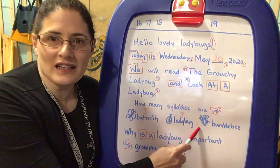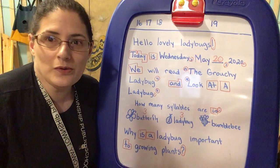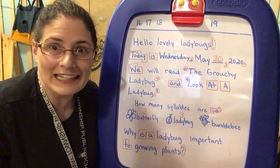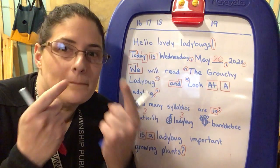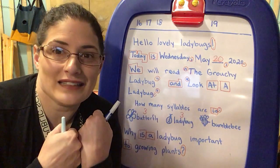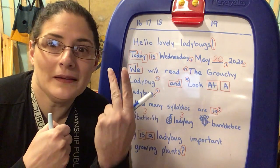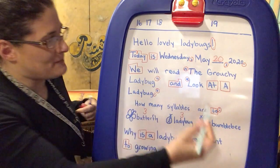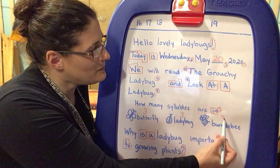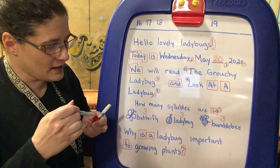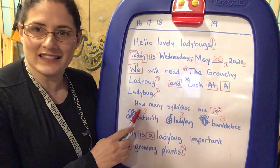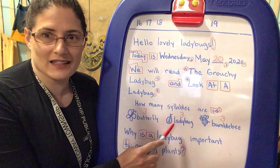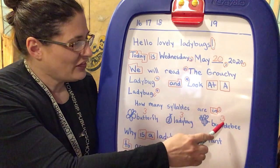And this last one says bumblebee. Can you do that one on your own? Let me see. Bumblebee — let's do our fingers: bum-ble-bee. How many syllables? One, two, three. Bumblebee has three syllables. So butterfly has three syllables, ladybug has three syllables, and bumblebee has three syllables — they're all the same, they are all equal. Cool!